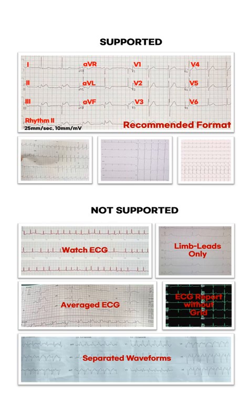ECG Buddy can only analyze standard 12-lead ECGs performed at a speed of 25 millimeters per second and a scale of 10 millimeters per millivolt. These can be presented in formats where each lead is drawn for 2.5 seconds, 5 seconds, or 10 seconds. All three formats can be analyzed, whether captured from a monitor or paper. ECGs with separated waveforms can be analyzed, but excessive separation may reduce accuracy.